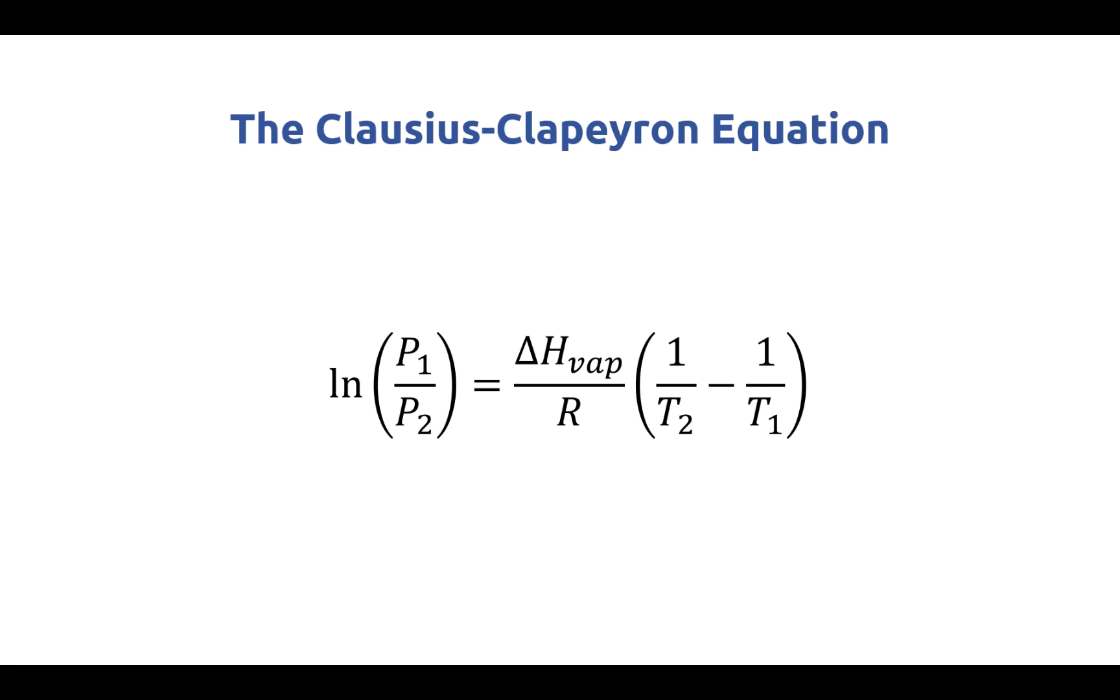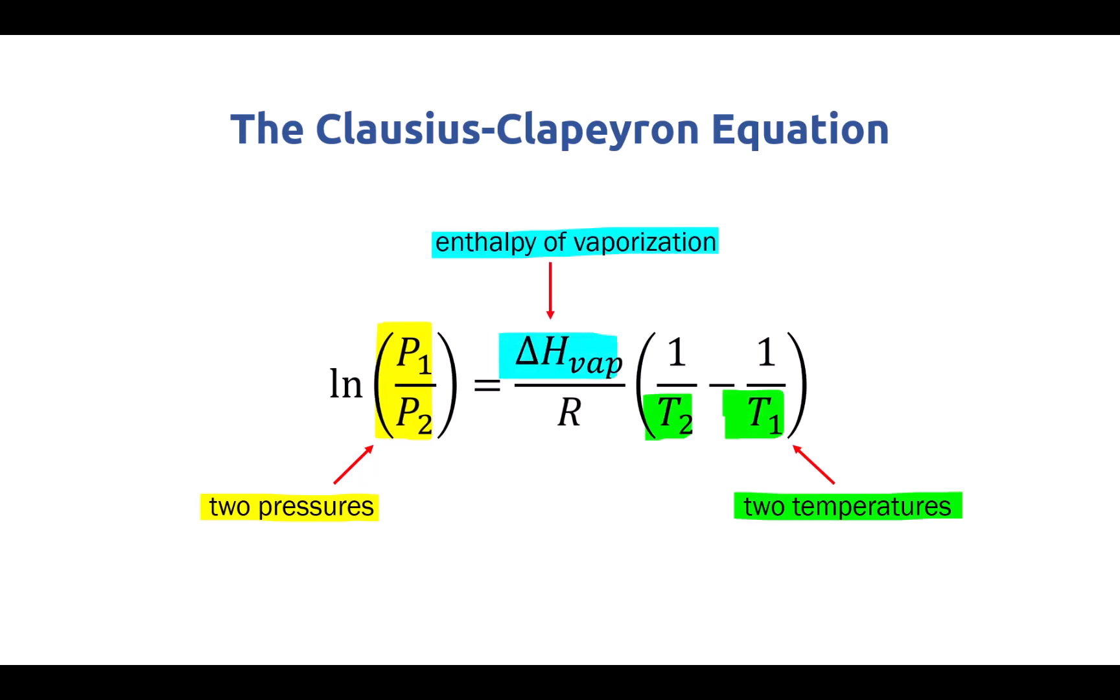This video covers the Clausius-Clapeyron equation, which is the equation shown on the screen. It's an interesting equation with a lot of variables. There are two pressure values, two temperature values, an enthalpy of vaporization, and the gas constant R.